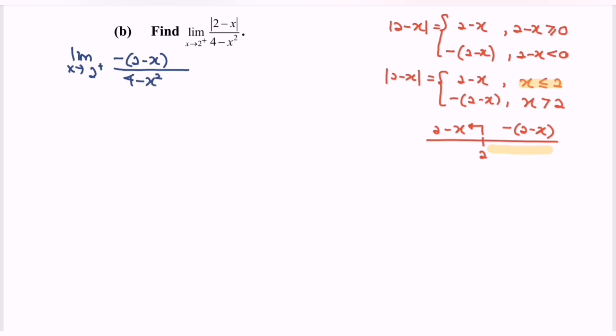Now what we have to do is substitute the value of 2. If we substitute 2, we will obtain 0 over 0. What we have is called the indeterminate form.